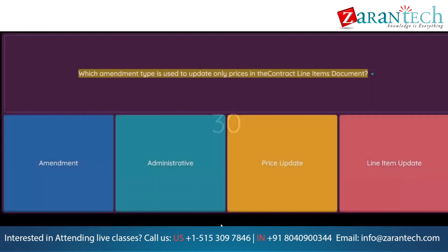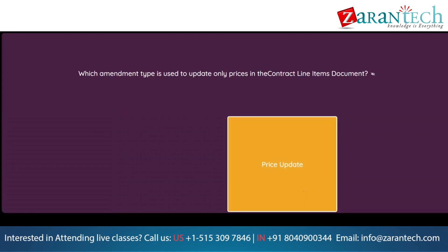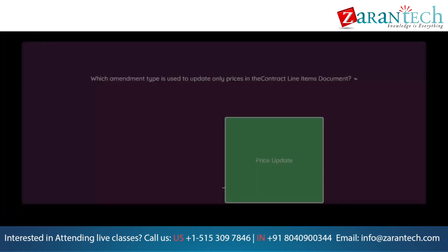Question: Which amendment type is used to update only prices in the contract line items document? Option 1: Amendment. Option 2: Administrative. Option 3: Price update. Option 4: Line item update.